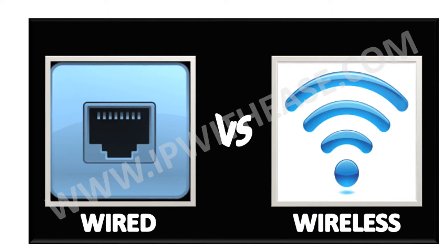Wireless network: wireless, as the term refers, uses air as a medium to send electromagnetic waves and infrared waves. Wireless devices have antennas for communication. Wireless connectivity provides a major benefit of user mobility and ease of deployment. It also becomes more useful in areas where wires can't be reached.